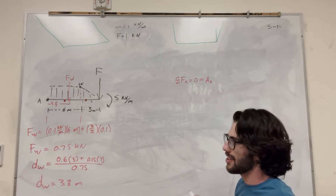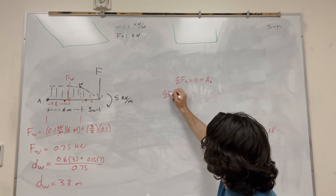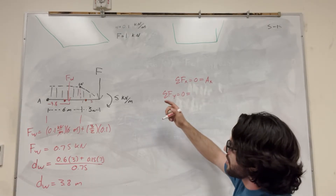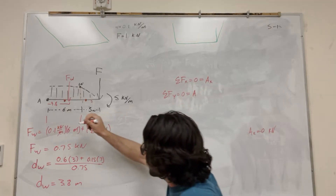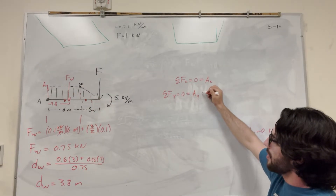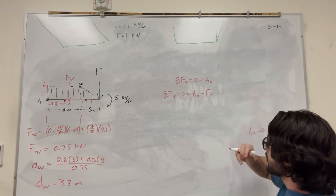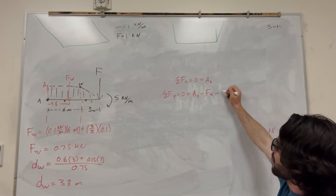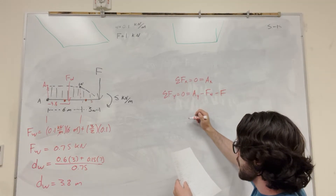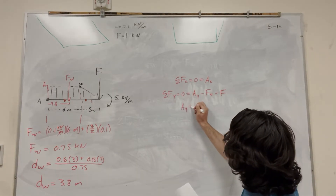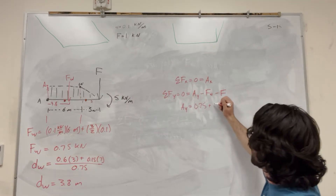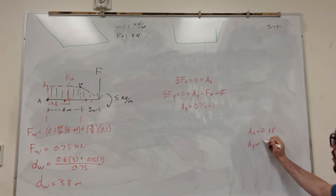Now the sum of forces in the y direction equals zero at equilibrium. A_y is pushing up, force W is pushing down, and the applied force is pushing down. Moving the two downward forces to the other side, A_y equals the force of weight 0.75 plus the applied force of 1, so A_y equals 1.75 kilonewtons.